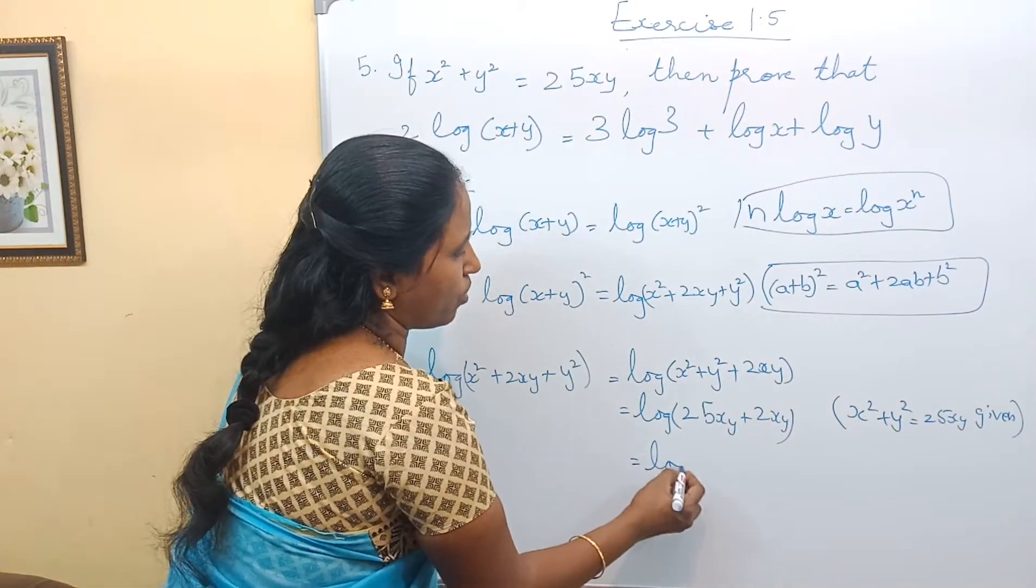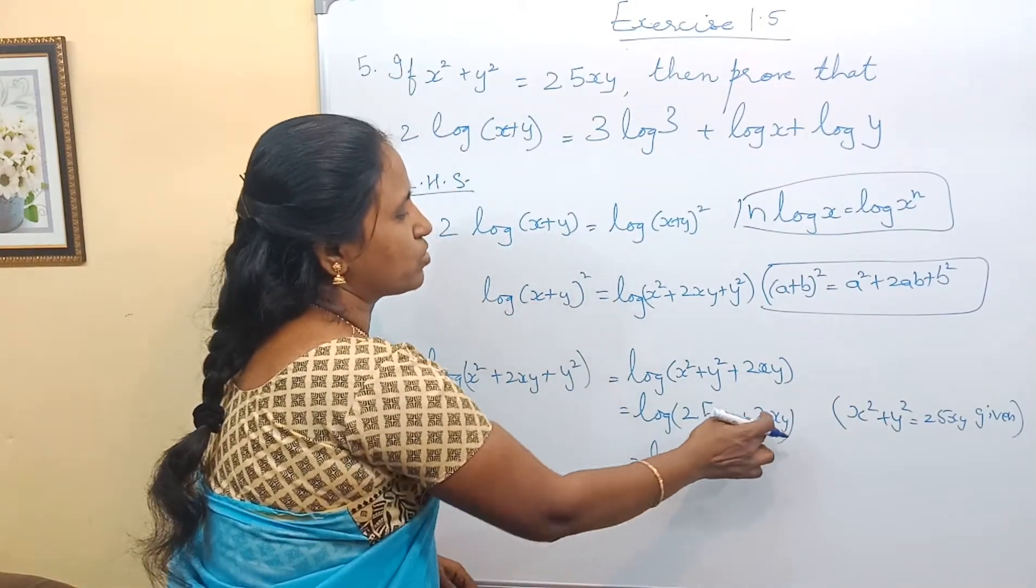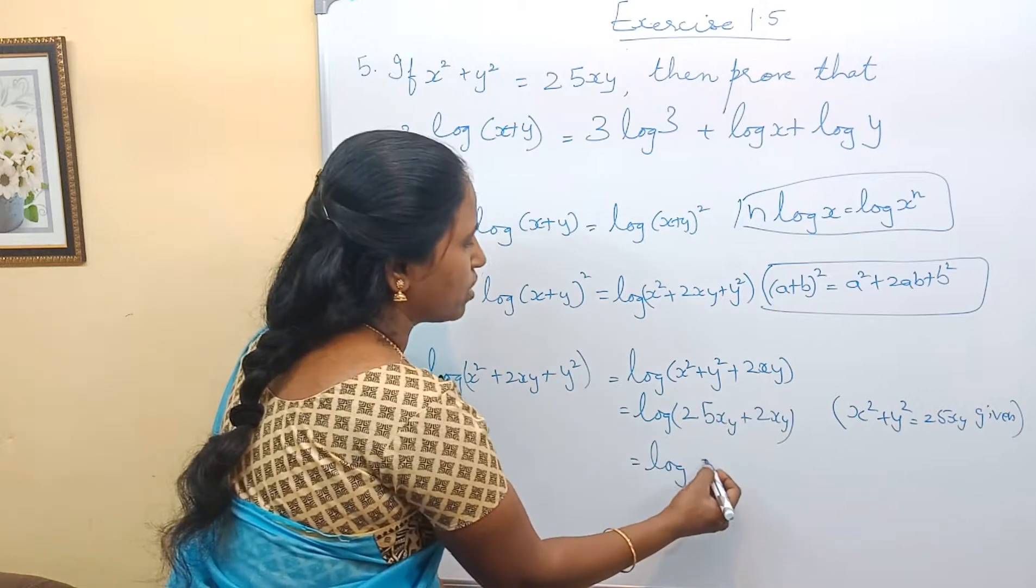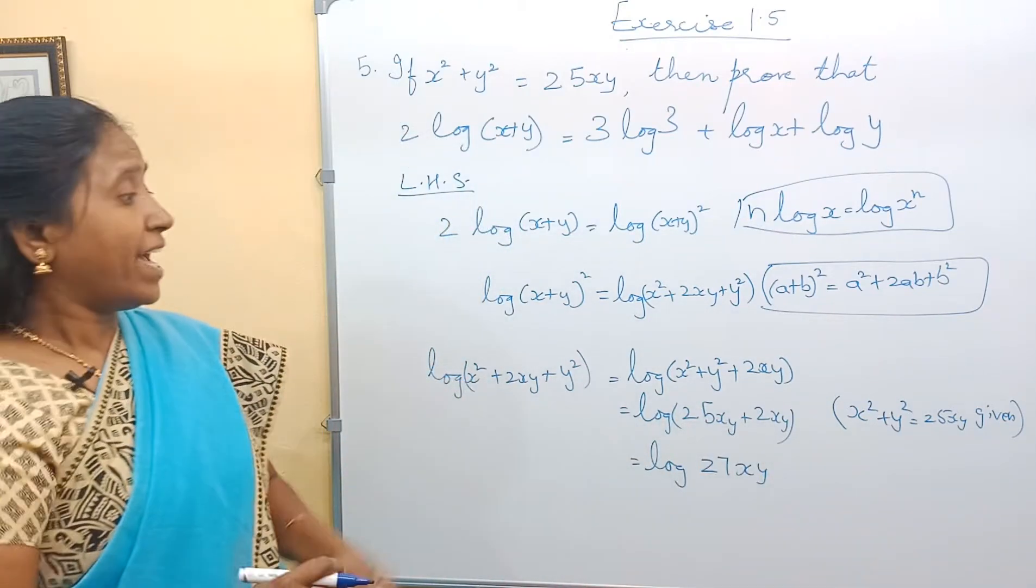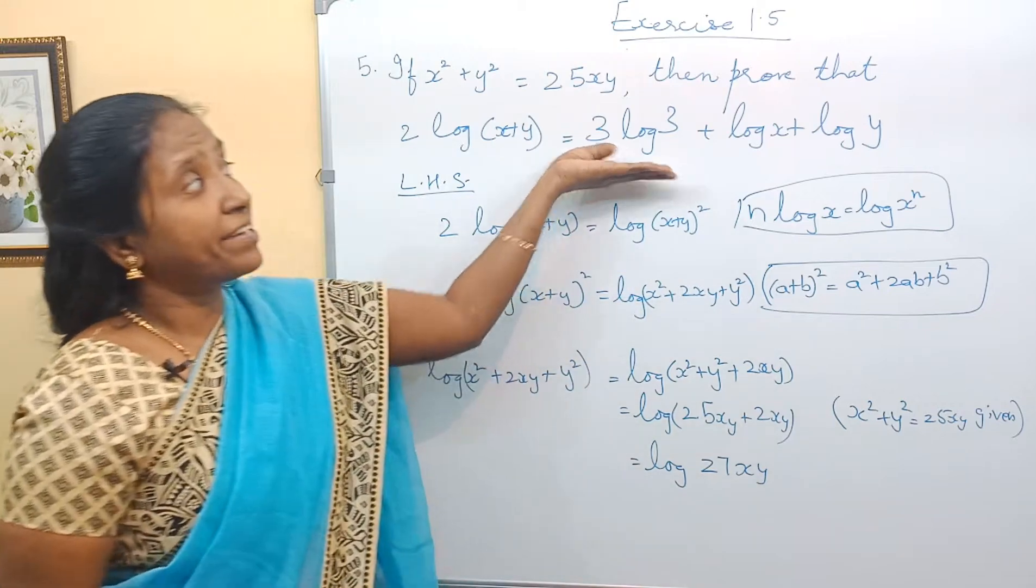So what do we do? Log(25xy + 2xy), xy term, xy term. So we add them: 27xy. Right? And now we have to write it in this form.